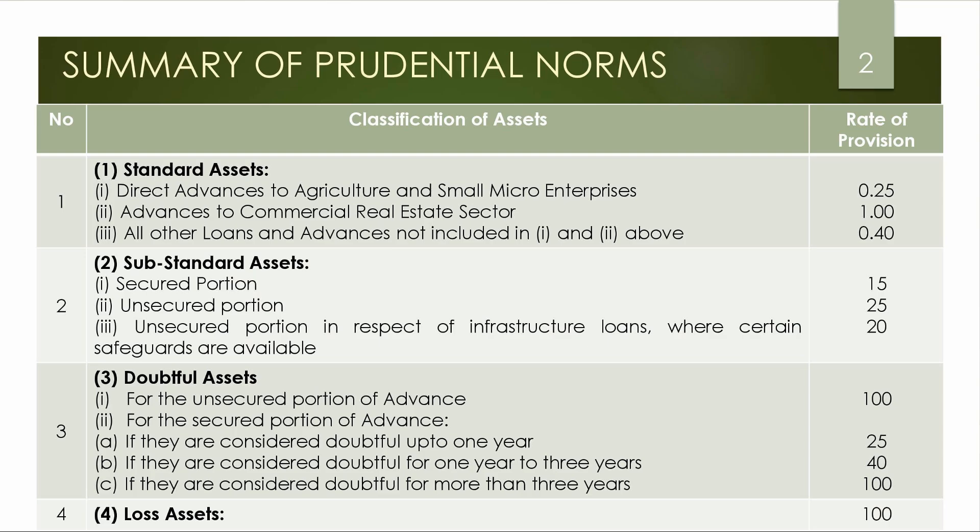This is just a summary of where the percentages are. For Standard Assets: Direct Advances to Agriculture and Small Micro Enterprises is 0.25%. Advances to Commercial and Real Estate is 1%. All other Loans and Advances under Standard Assets is 0.4%.